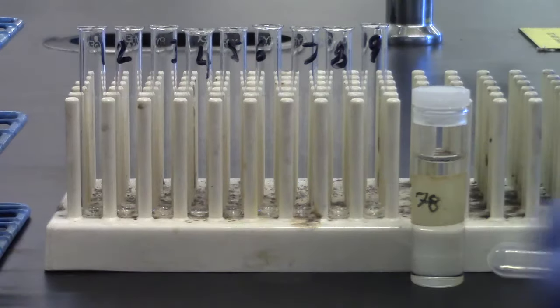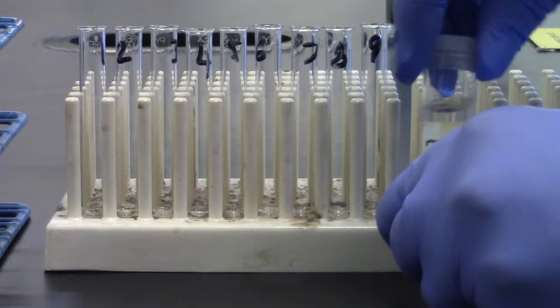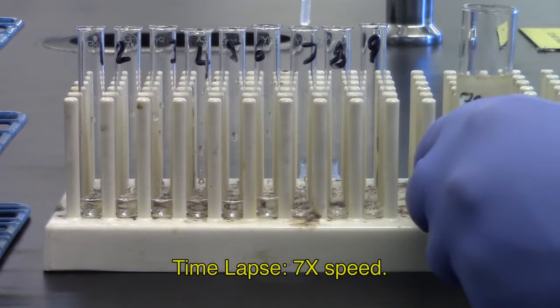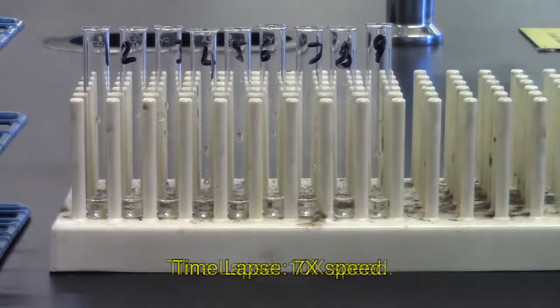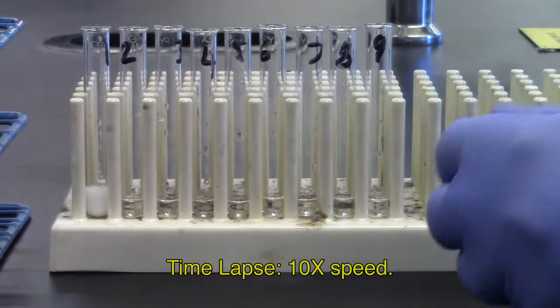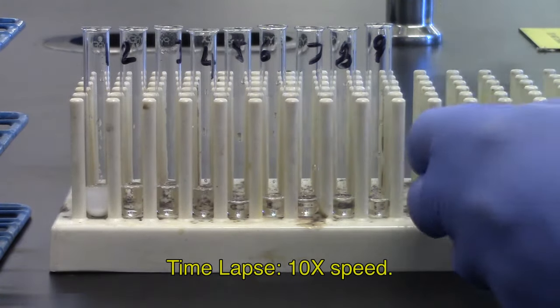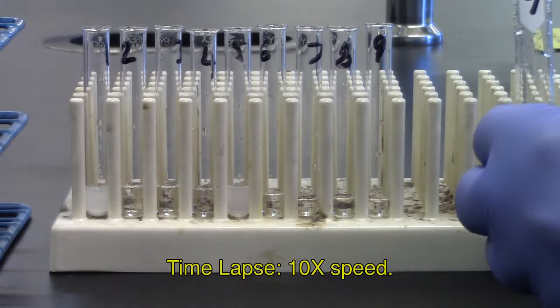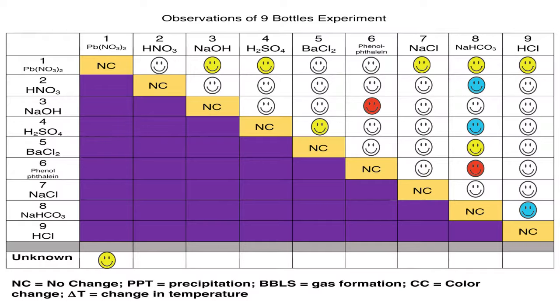Unknown. Obtain an unknown from your instructor and record the unknown number. This is all the unknown that is available for your use. Pour about one centimeter of the unknown in each of the labeled test tubes, one to nine. To each sample tube, add an equal amount of corresponding solutions, one through nine. Record the results on the table.